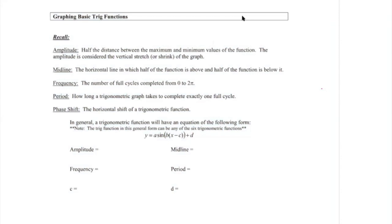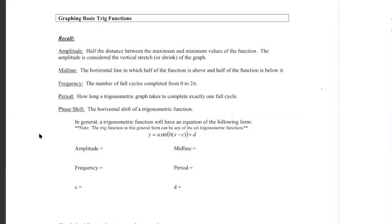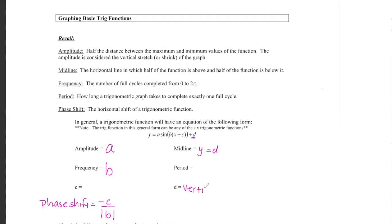So a represents the amplitude — half the distance between the maximum and minimum values of the function. That's going to tell you how high above and how far below the x-axis you're going to go, if you don't have a vertical shift. The frequency, the number of full cycles completed from zero to two pi, is the b value. The phase shift is equal to negative c over the absolute value of b. The midline comes from the d value, so the midline is y equals d, and d also gives us our vertical shift — how much you need to shift your graph up or down.